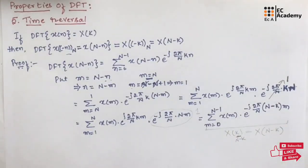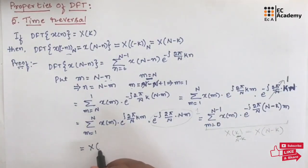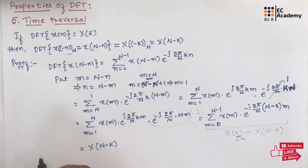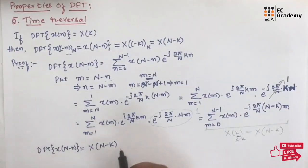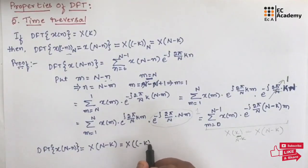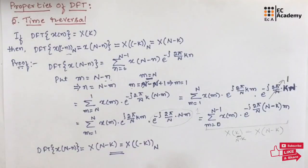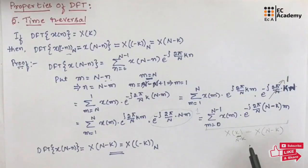So we can say this equation equals X(N-k). On the left-hand side, it is DFT of x(N-n), which we can write as X(-k mod N). This is the time reversal property of DFT. Hope you have understood the topic. Thank you.